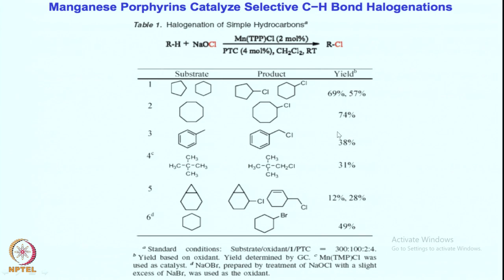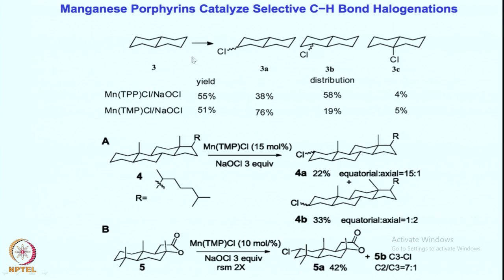Indeed there is such work — from J.T. Groves' group, these are early works — where the manganese TPP complex can do such chemistry with the formation of manganese hypochloride, which is working in an electrophilic manner where the chlorine is effectively chlorine-plus. These different aliphatic substrates can be halogenated by utilizing this manganese hypochlorite formation and subsequent O-Cl cleavage. Looking at the substrate in J.T. Groves' case where this manganese catalyst was used with sodium hypochlorite, these halogenation reactions are possible.